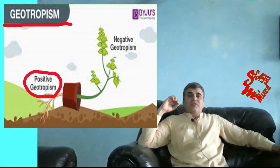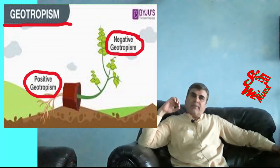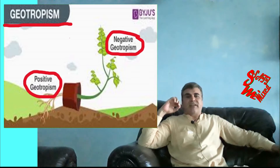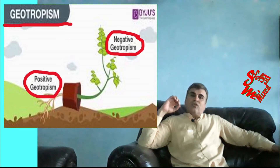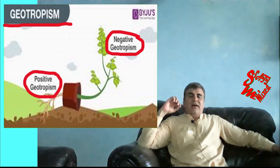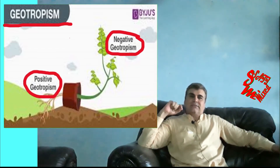Gravitropism can be positive — meaning in the direction of gravity — or negative — meaning opposite to the direction of gravity. Charles Darwin was the first to notice this phenomenon; however, he couldn't explain it.